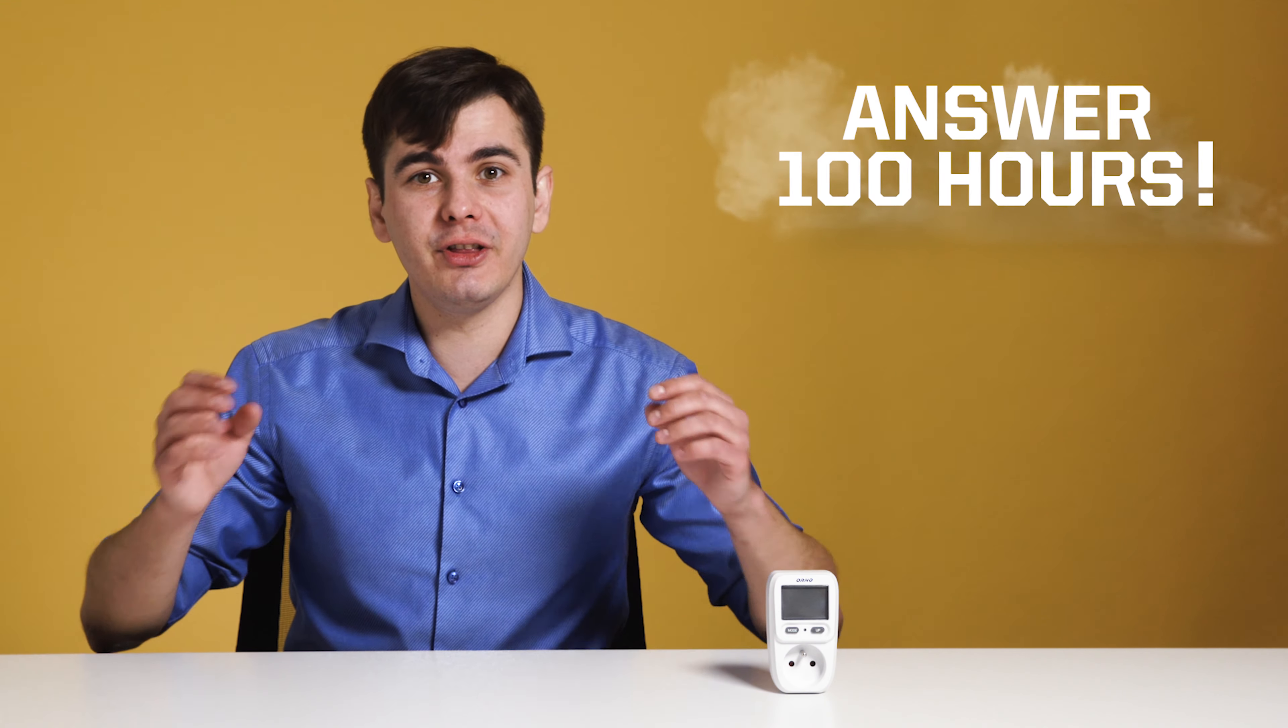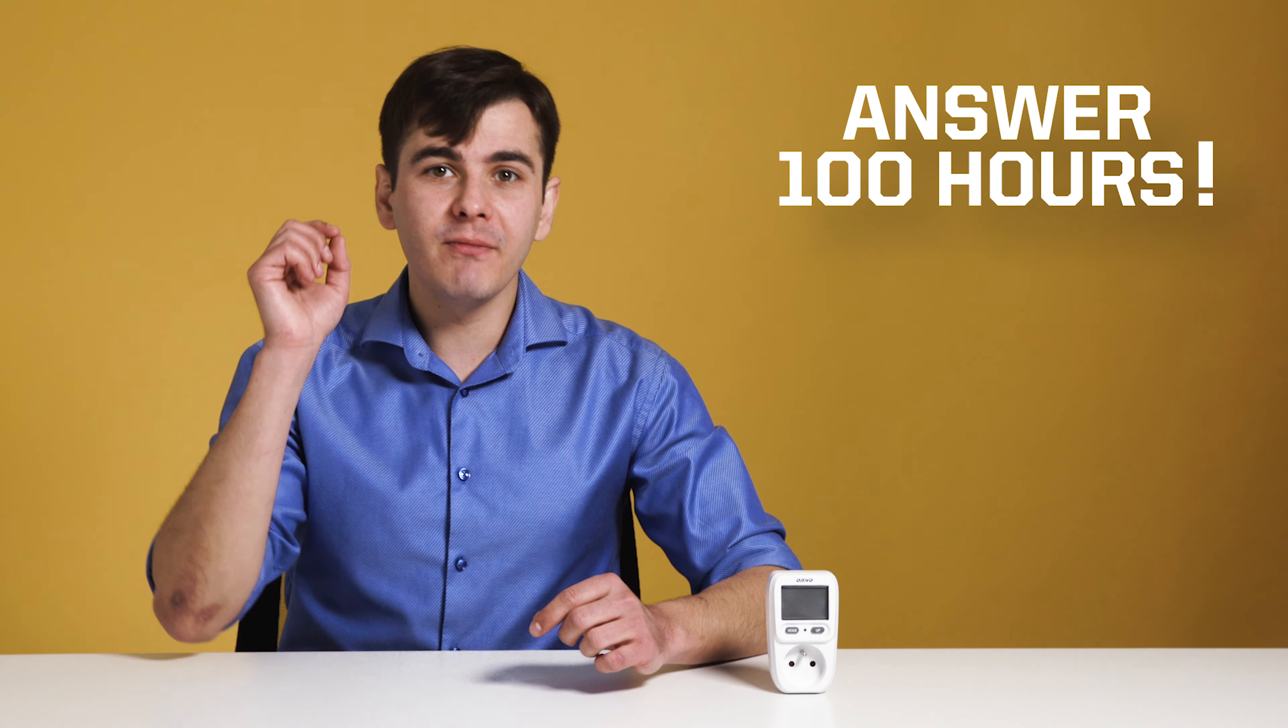3,600,000 joules is 1 kilowatt-hour. You use 10 watts for your LED light bulb. It can be on for 100 hours and you will pay for it 13 cents. It's much easier and clearer.